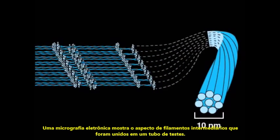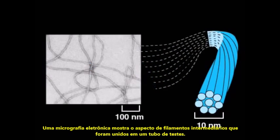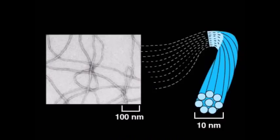An electron micrograph shows the appearance of intermediate filaments that have been assembled in a test tube.